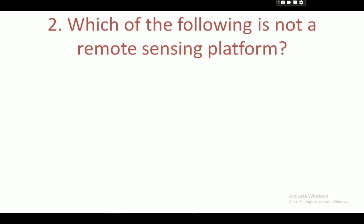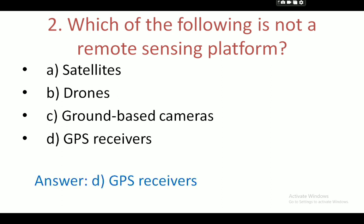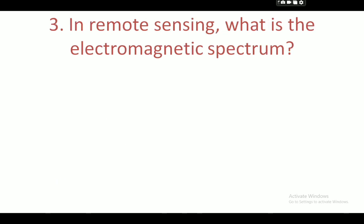Next question: which of the following is not a remote sensing platform? Your options are: satellites, drones, ground-based cameras, and GPS receivers. Your correct answer is D — GPS receivers are not a remote sensing platform.